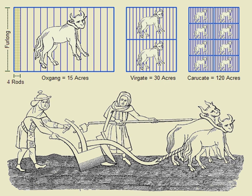A long, narrow strip of land is more efficient to plough than a square plot, since the plough does not have to be turned so often. The word 'furlong' itself derives from the fact that it is one furrow long. Before the enactment of the metric system, many countries in Europe used their own official acres. These were differently sized in different countries; for instance, the historical French acre was 4,221 square metres, whereas in Germany there were many variants of 'acre' differing between the German states.